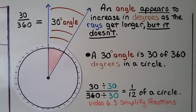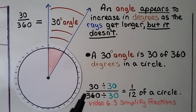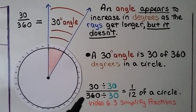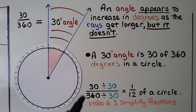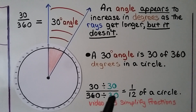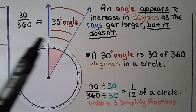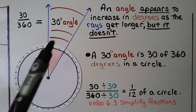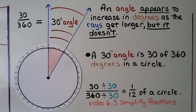A 30 degree angle is 30 of the 360 degrees in a circle. We can simplify the fraction 30/360 by dividing by common factors. 30 can go into both 30 and 360: 30 divided by 30 is 1, and 360 divided by 30 is 12. That means this is 1/12 of a circle. If that confused you, there's a link to the Simplifying Fractions video 6.3 in the description.